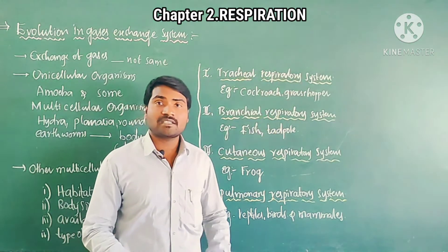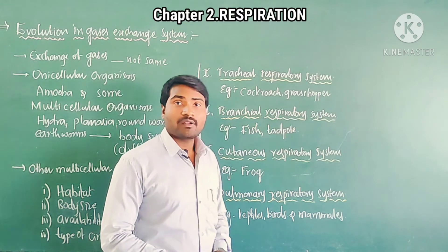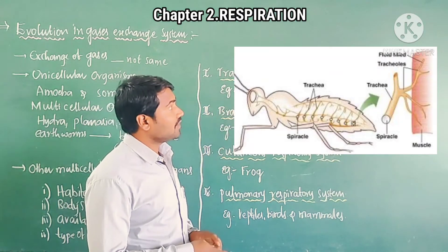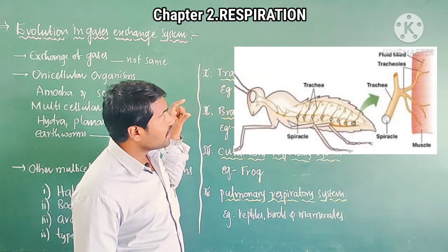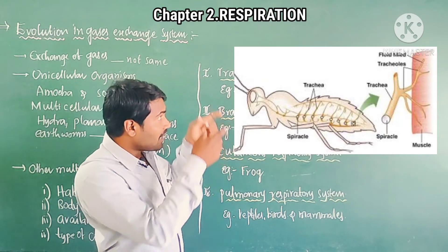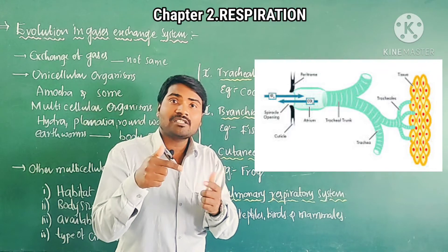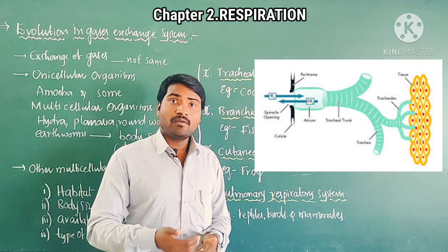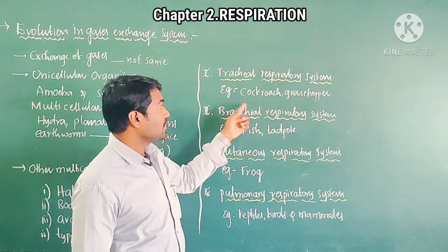Let me discuss first: the tracheal respiratory system. In this respiratory system — examples are cockroach and grasshopper — tracheal respiration occurs in almost all insects. They have holes on their body surface called spiracles. From the spiracles, a tube originates called the trachea. All tubes make a network-like system called the tracheal system. Every tube is directly connected to the cells. Oxygen enters through the spiracles into the trachea and reaches the cells directly. Carbon dioxide returns the same way. This is called the tracheal respiratory system.